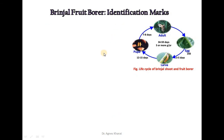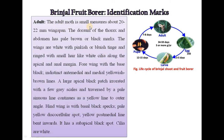The main identification marks of brinjal fruit borer: the adult moth is small, measuring about 20 to 22 mm wingspan. The dorsum of the thorax and abdomen has pale brown or black marks. The wings are white with a pinkish or bluish tinge and fringed with small hair-like white cilia along the apical and anal margin. The fore wings have a basal black spot, indistinct white intermedial and medial yellowish-brown lines, a large apical black patch irrorated with grey scales and traversed by a pale sinuous line continuing as a yellow line to the outer angle. The hind wing has a basal black apex, pale yellow discocellular spot, yellow postmedial line bent inversely, a subapical black spot, and white cilia.